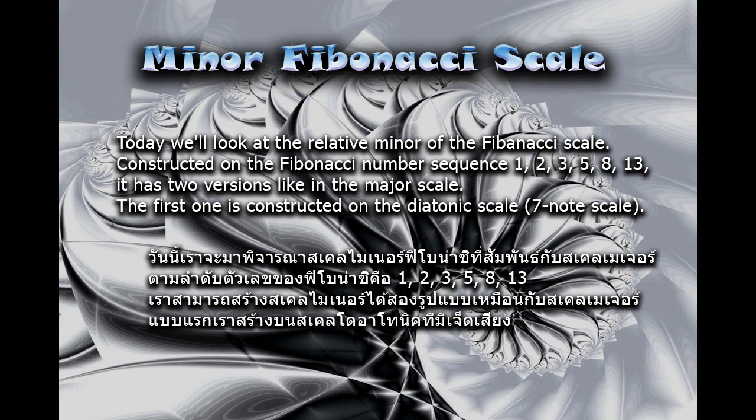Today we'll look at the relative minor of the Fibonacci scale, constructed on the Fibonacci number sequence 1, 2, 3, 5, 8, and 13. It has two versions like in the major scale. The first one is constructed on the diatonic scale, or the 7-note scale.